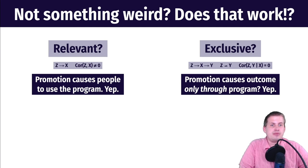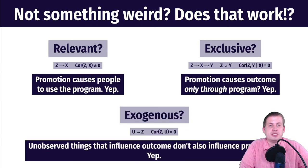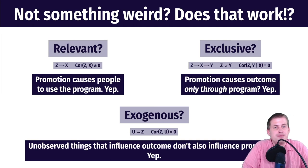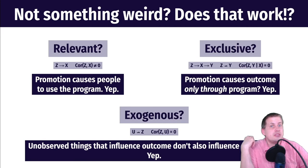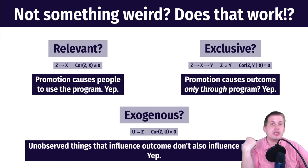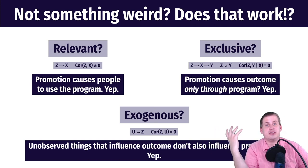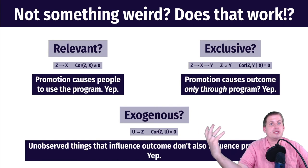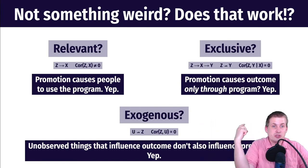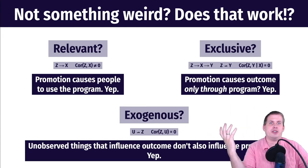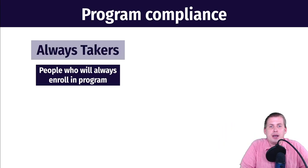Random promotion causes voting behavior only through voter registration, so it works as an exclusive instrument. Third, exogeneity: unobserved things that influence the outcome shouldn't influence the promotion. Since promotion is randomized, all arrows coming into that node disappear — just like a randomized controlled trial. So randomly assigning encouragement is purely exogenous, and it technically meets all three characteristics of an instrument.